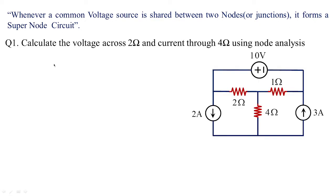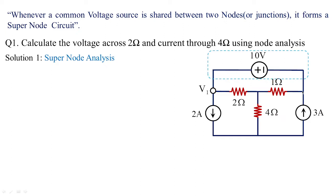Example: calculate the voltage across 2 ohms and current through 4 ohms using node analysis. It is a super node analysis problem because 10 volts is shared between this point as well as this point. So it is a super node circuit — not a simple node circuit — because 10 volts is shared between node 1 and node 3. So these nodes I am identifying as V1, V2, and V3.